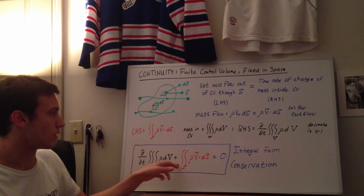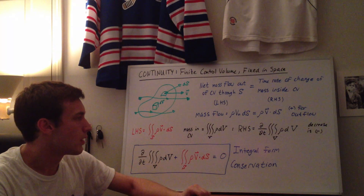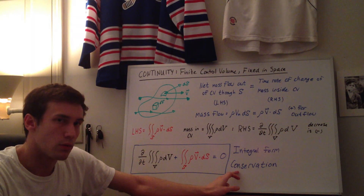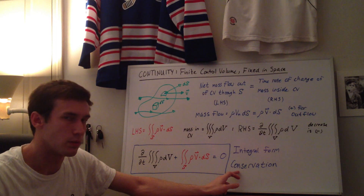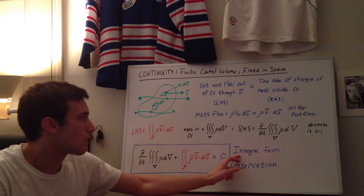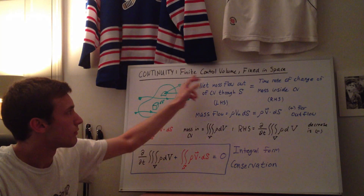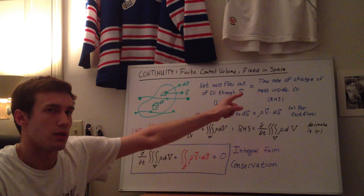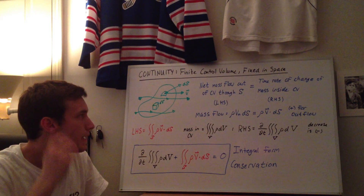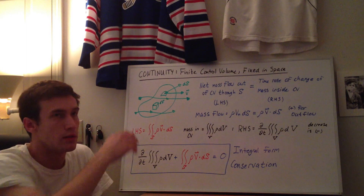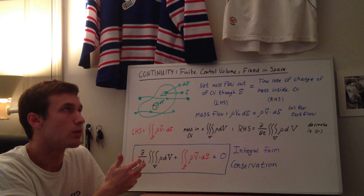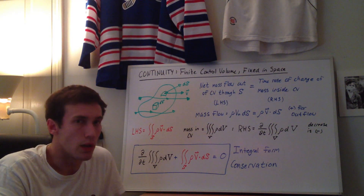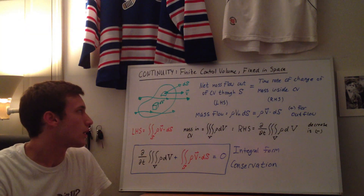This gives you the integral form of the conservation of mass, which is also the conservation form, as opposed to the non-conservative form. The integral form comes about because we use the finite control volume, and the conservation form is because it's fixed in space as opposed to moving. The next video will be the differential control volume, or the infinitesimally small fluid element fixed in space. Thank you for watching.